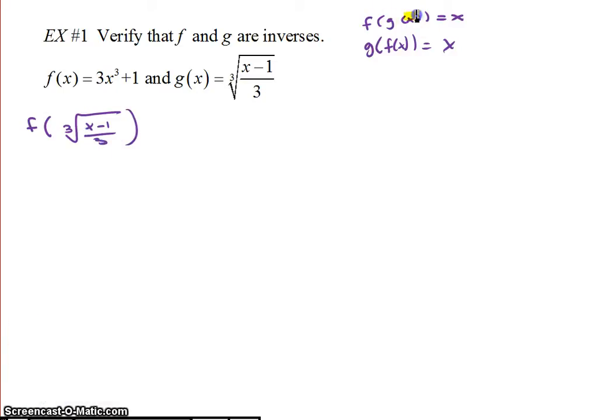So what I did is I'm first finding f of g of x, so I'm replacing g of x here - that's what g of x is here. So I'm finding f of g of x. I replace g of x, the yellow, g of x here. So now I'm going to plug this - this is my input, and this goes into my f function. So it's 3 times the cube root of x minus 1 over 3 cubed plus 1. So we have to simplify this down, and remember when we simplify, we ultimately want to verify to get x out if they are inverses.